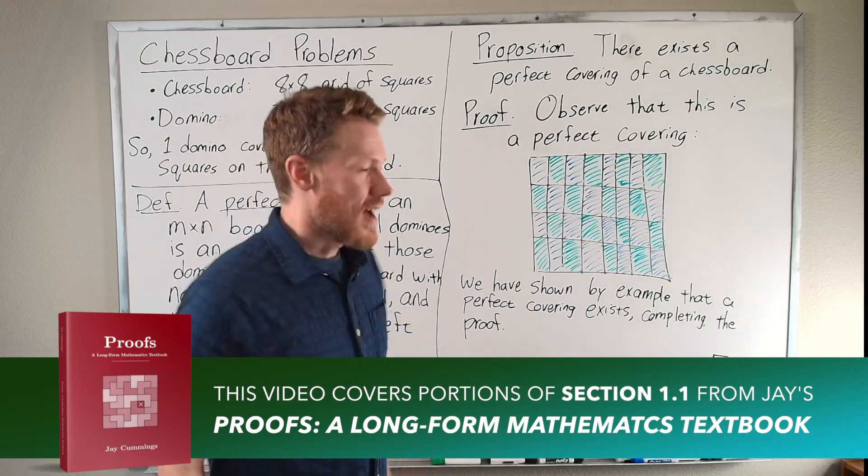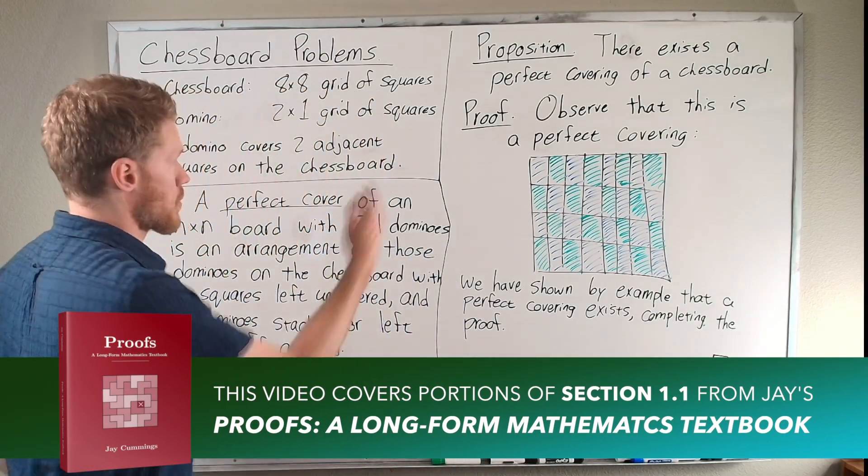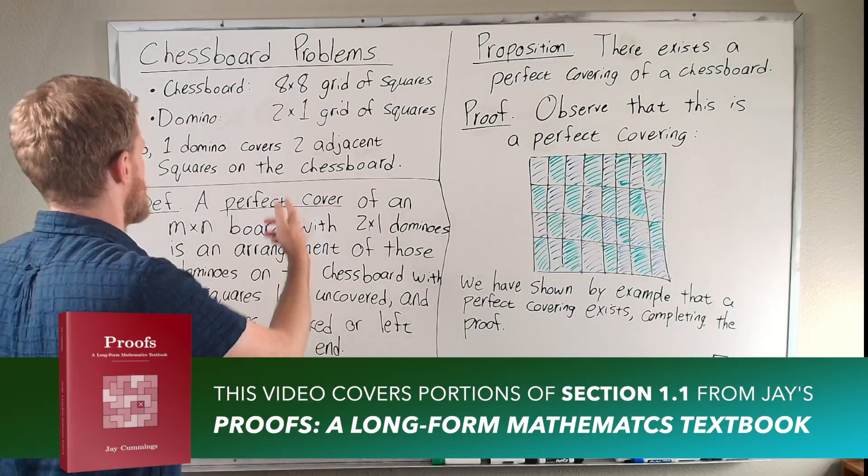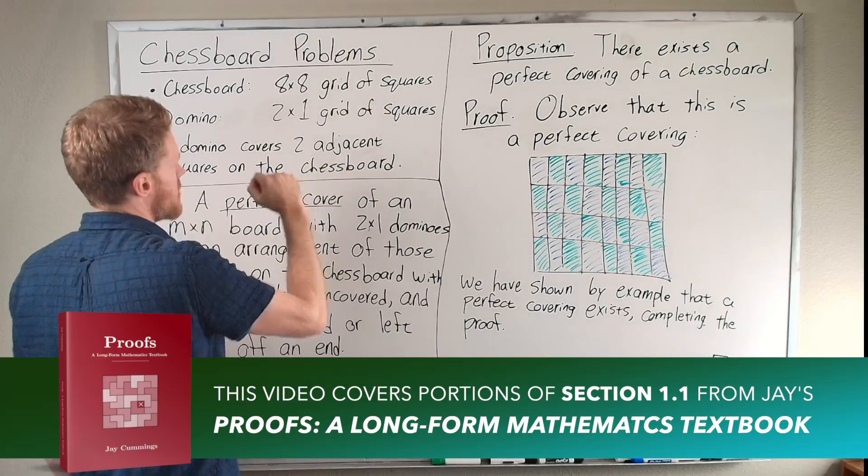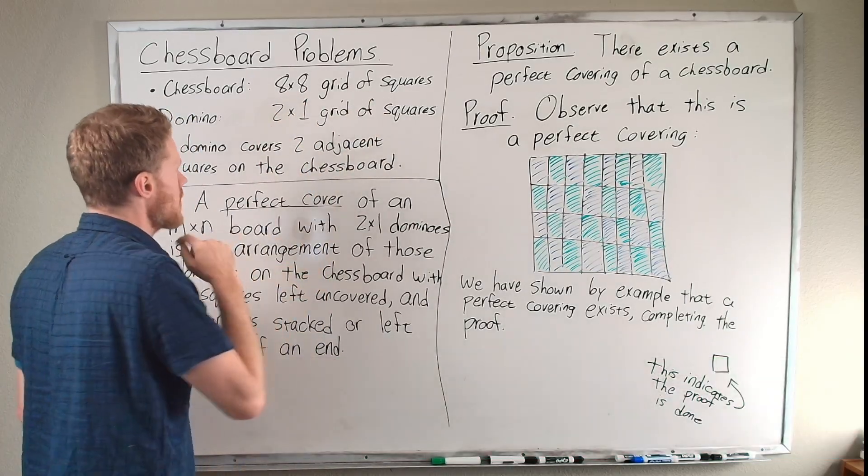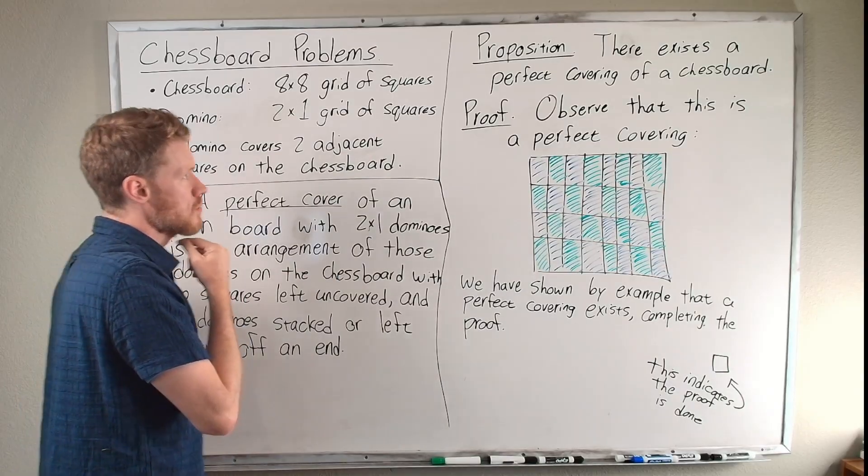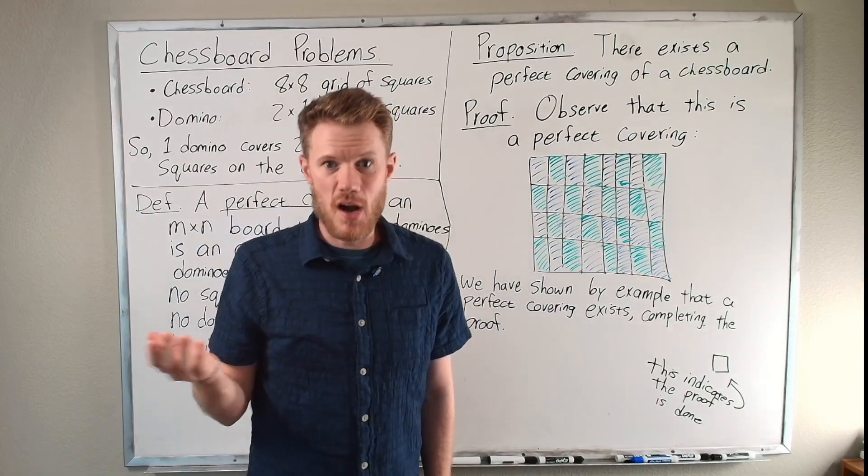All right, hello, welcome back. So last time we were talking about perfect coverings of chess boards. A chess board, remember, is an 8 by 8 grid of squares. A domino is a 2 by 1 grid of squares. So does there exist a perfect covering of a chess board?